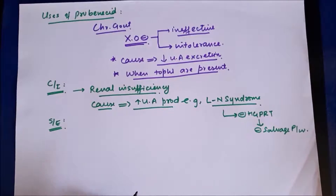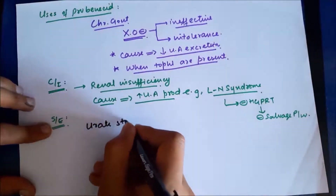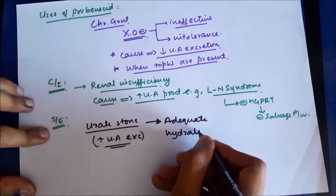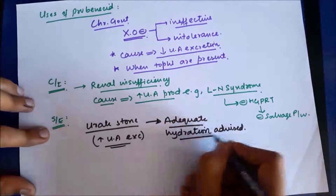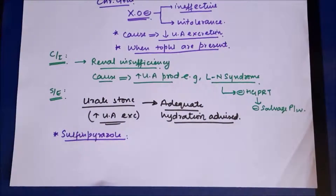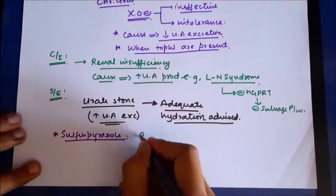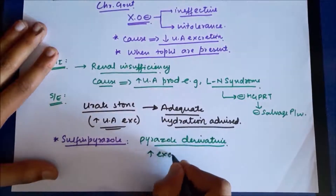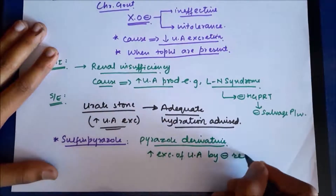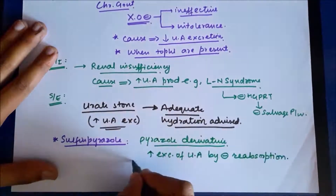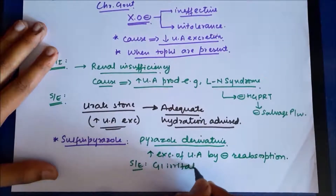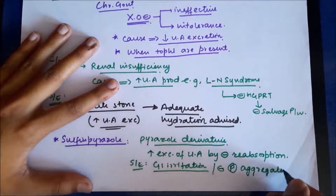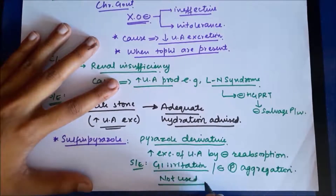Side effects of probenecid include deposition of urate stones in the urinary tract due to increased uric acid excretion, so adequate hydration is advised. Another drug from this class is sulfinpyrazone, a pyrazole derivative that also increases excretion of uric acid by inhibiting its reabsorption in the renal tubule. However, it produces side effects such as GI irritation and inhibits platelet aggregation, which is why it is not commonly used nowadays.